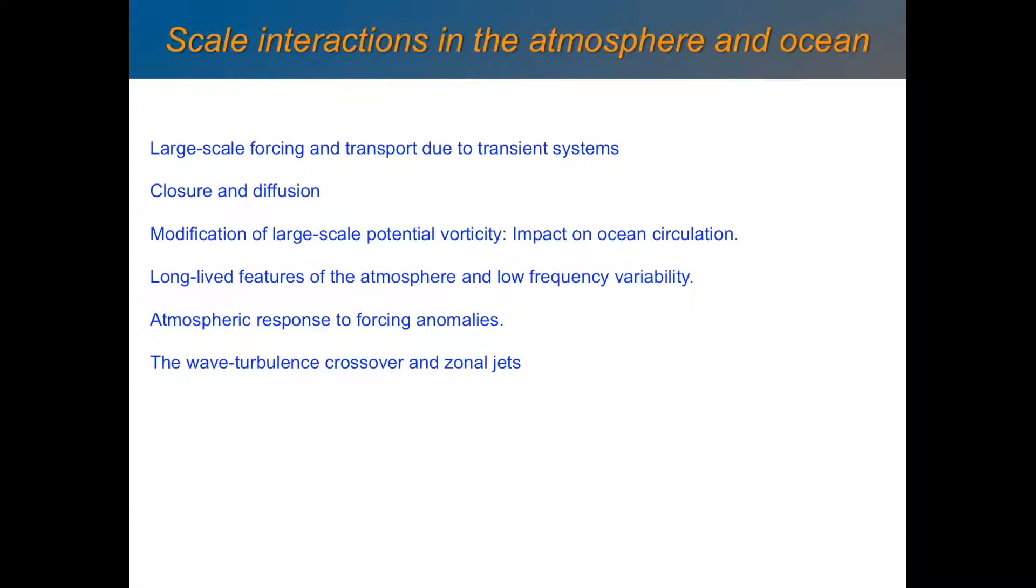So today we're going to talk about scale interactions in the atmosphere and ocean and how these transient systems will modify the mean flow. We're talking about large-scale forcing and transport due to transient systems. When I say forcing and transport, it's the same thing really. These perturbations will transport properties, so they will be involved in fluxes of heat and momentum and potential vorticity. And that can be considered as a way of forcing the lower frequency flow.